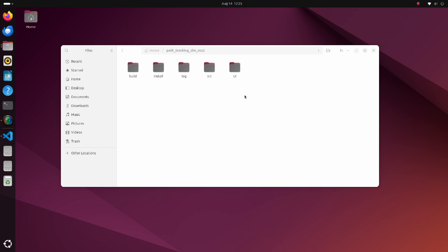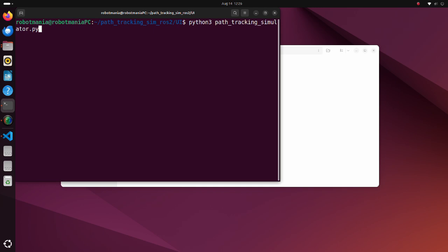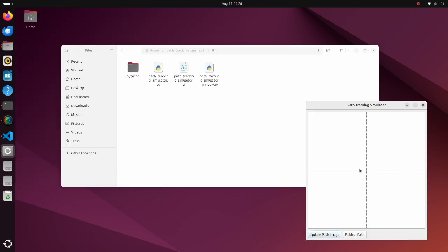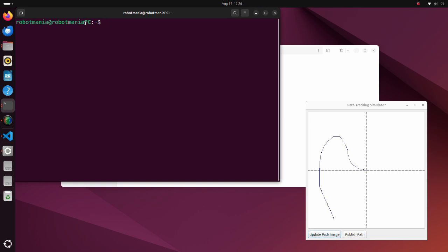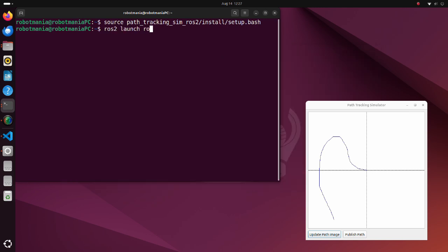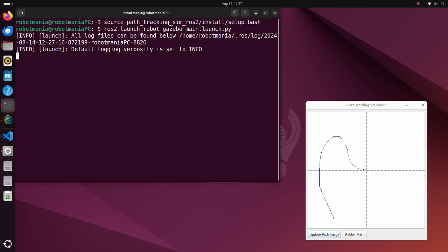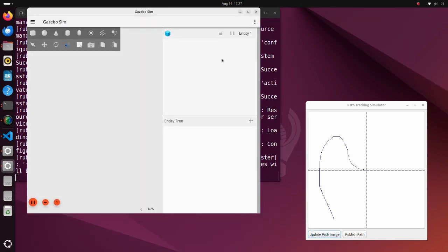To execute the simulation, first run the path tracking simulator script. Draw a trajectory and push the updatePathImage button. Second, run the main launch script.